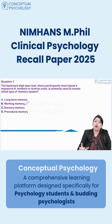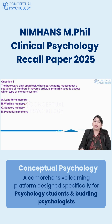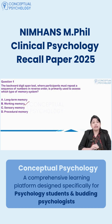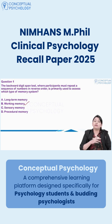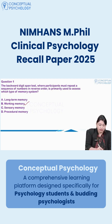Unlike forward digit span, which mainly tests the passive storage capacity of the phonological loop, the backward digit span requires active manipulation and processing of information. Participants must not only hold the digit sequence in mind but also mentally reverse the order before responding. This dual requirement of storage and manipulation is the hallmark of working memory function.